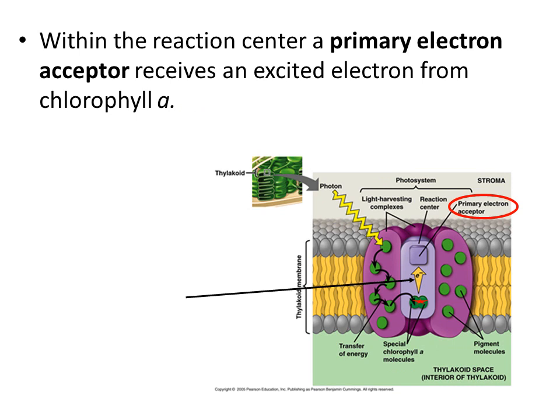Within the reaction center we have a lavender square called the primary electron acceptor. The electrons that were stimulated by photon energy moved from pigment to pigment within the photosystem, eventually got to the reaction center, and will now be handed off to the primary electron acceptor. What gives the electron to the primary electron acceptor is chlorophyll A.